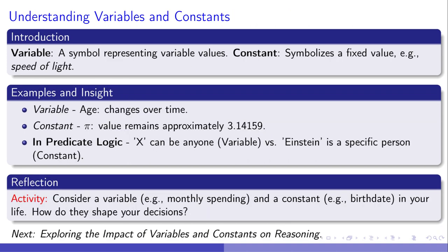Picking up from Frege's meticulous approach, let's pinpoint variables and constants, the bedrock of logic. A variable, akin to our ever-fluctuating mood, contrasts sharply with a constant, like the unwavering 24 hours in a day. In the realm of predicate logic, envision X as any book on your shelf, a variable, against the Lord of the Rings, a constant for Tolkien fans. This distinction fuels our understanding of flexibility versus stability in reasoning. Imagine how the variable of daily temperature and the constant of the Earth's gravity impact our life choices. Spotting these elements illuminates logic's presence in daily decisions, seamlessly leading us into exploring their bigger role in reasoning.